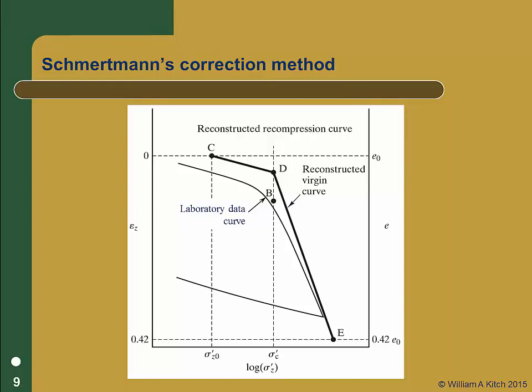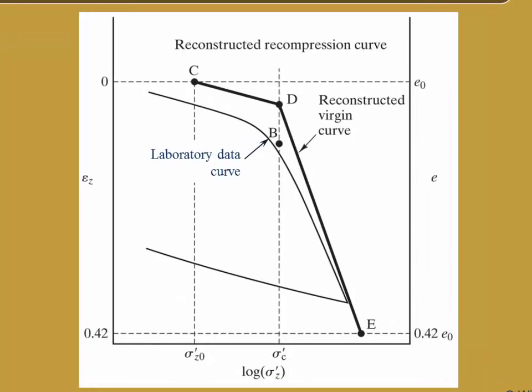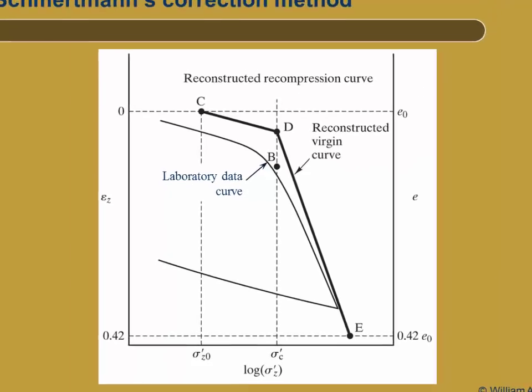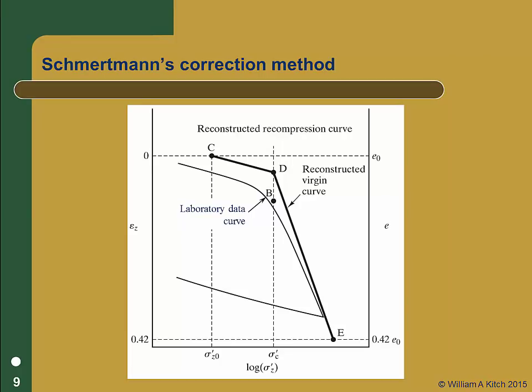Schmertmann extended Casagrande's method into a procedure to reconstruct an estimate of the field compression curve from a moderately disturbed laboratory curve. This figure shows a typical lab data curve and the corresponding reconstructed field curve using Schmertmann's method. The procedures are outlined on pages 439 and 440 of your text. It is important to note that the reconstructed field curve lies outside of the measured lab data and therefore constitutes an extrapolation of the lab data. Extrapolation is always a dicey endeavor and the accuracy of curves reconstructed by this method is questionable. The best approach is to get a high quality sample and use good laboratory techniques so you get a lab curve that clearly shows the pre-consolidation stress and requires little correction.